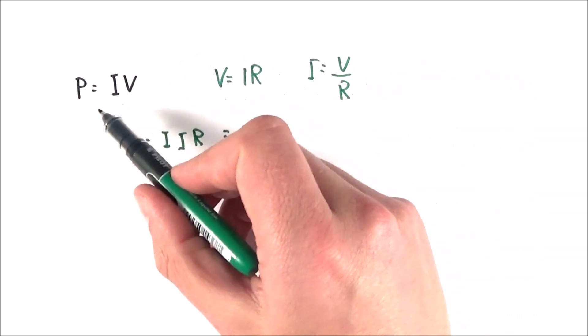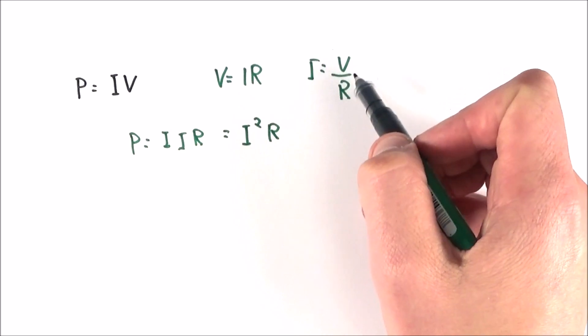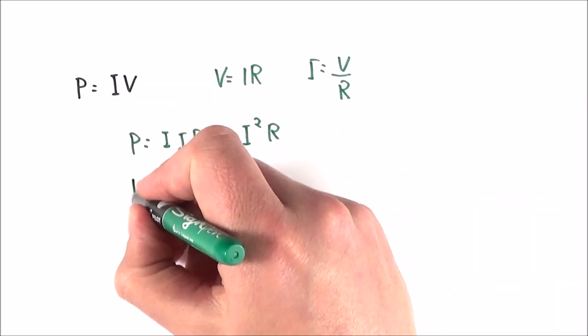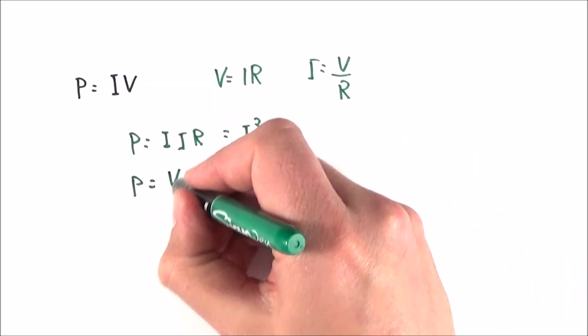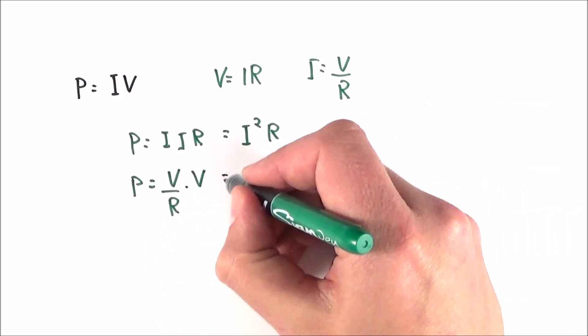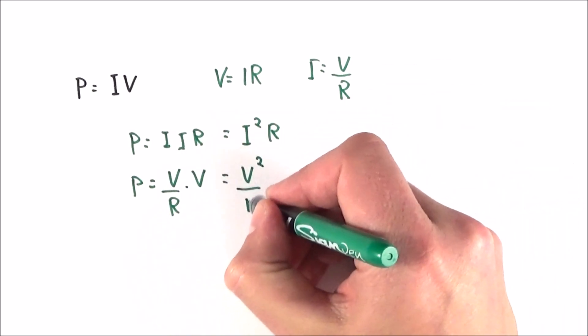And if we think about replacing the I term with V over R, we can also write that P is equal to V over R multiplied by V, which is equal to V squared over R.